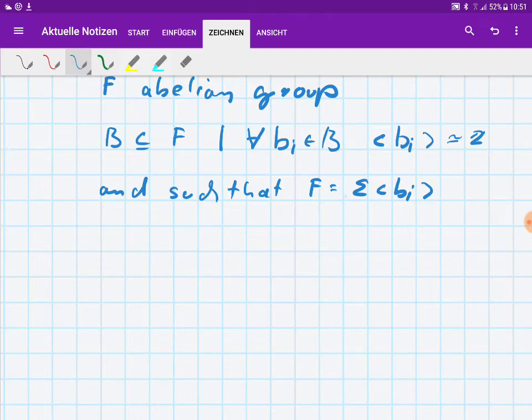By definition of the direct sum, let's pick an element x which is an element of F. How does x look like? x is a finite linear combination which looks like this. We have a sum going from i equal to 1 to n with coefficients mi which multiply the bi and all elements in F look like this.